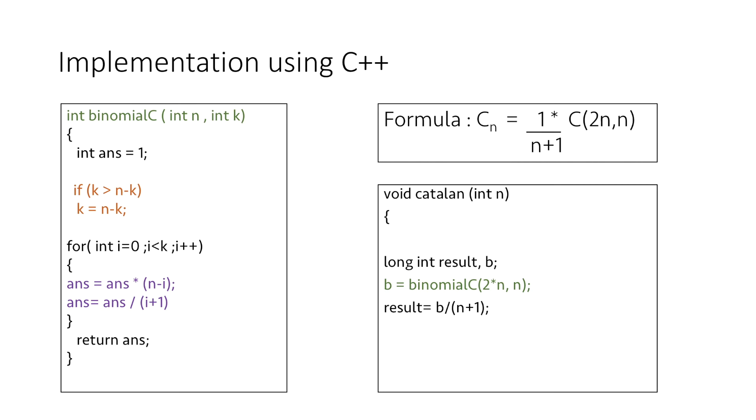And now all we need to do is divide our binomial coefficient b by n plus 1 to get the Catalan number for n and finally we display that Catalan number which is stored in the variable result. And we are done with the function. I have linked the code in the description. Thank you for watching.